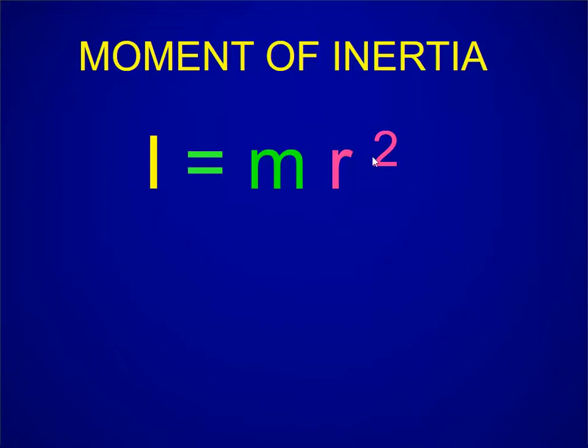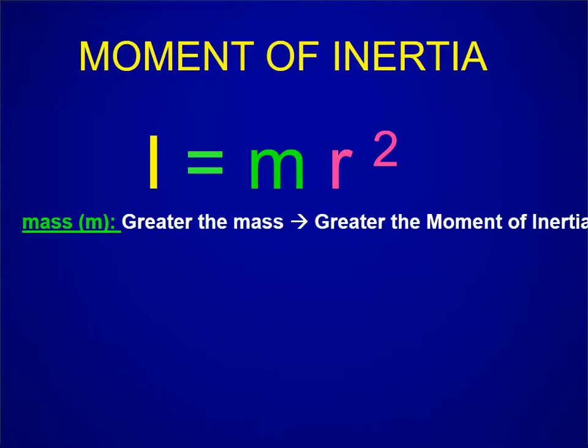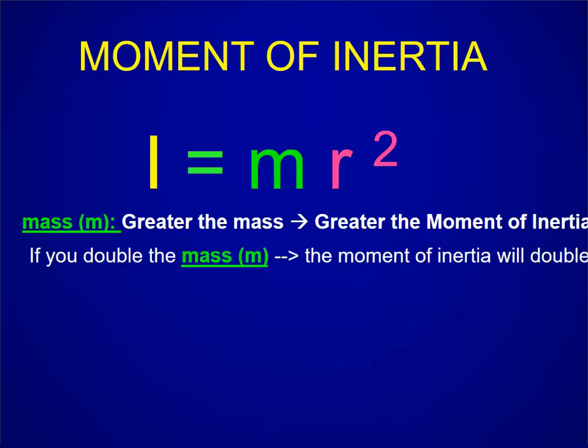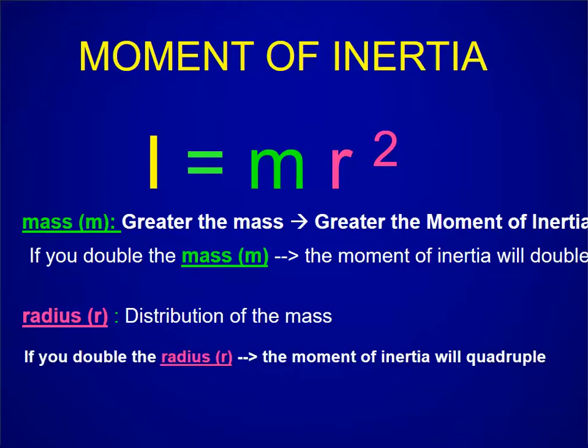So this distribution of mass is a significant part of the inertia that resists rotation. And so the greater the mass, the greater the moment of inertia. If you double the mass, the moment of inertia will double. However, the distribution of that mass is more important because if you double the distribution or the radius of that mass, you increase the moment of inertia by a factor of four.